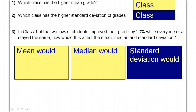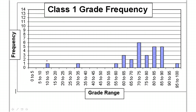We decided that class 2 had the higher mean and class 1 had the higher standard deviation. Now look at problem 3. In class 1, if the two lowest students improved their grade by 20% while everyone else stayed the same, how would this affect the mean, the median, and the standard deviation? We're talking about class 1, and these two little bars reflect the lowest two students.